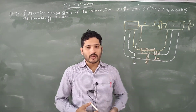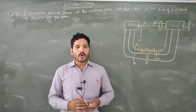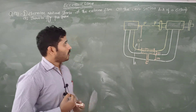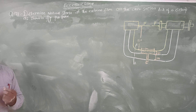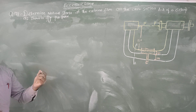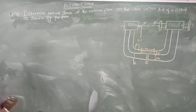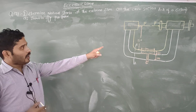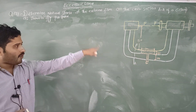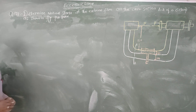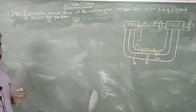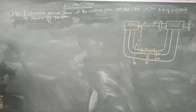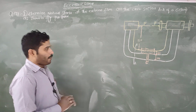Good afternoon, dear students. Today we are going to learn a problem on eccentric load. We need to determine the normal stress at the extreme fiber — both the outermost and innermost fiber — on the cross-section AA of a C-clamp as shown in the figure. The load acting on this bar is 80 kN. The first thing is we need to find out the area of the cross-section of a T-bar.